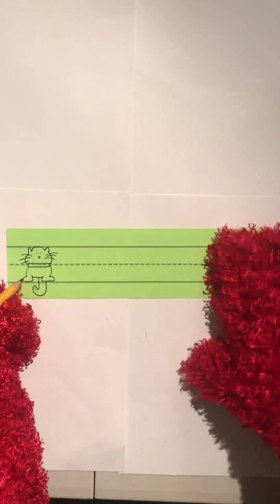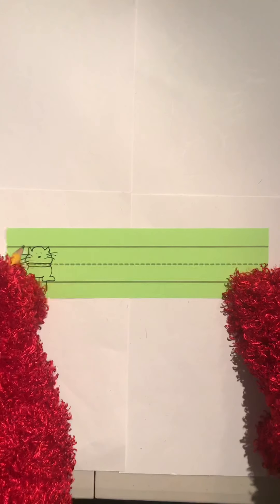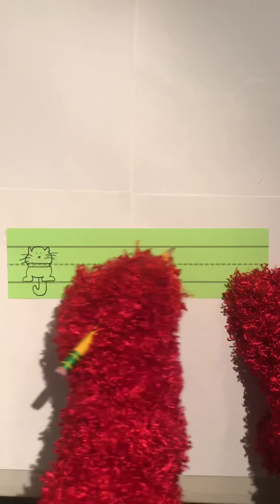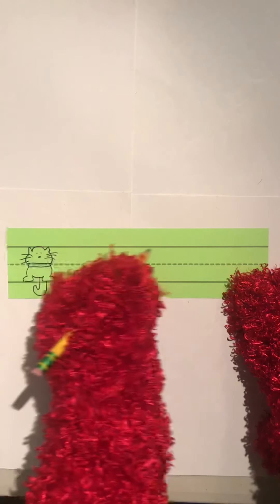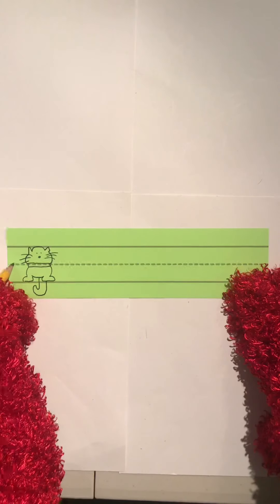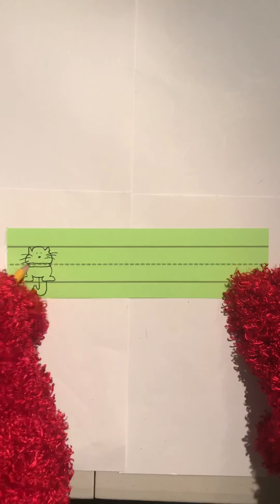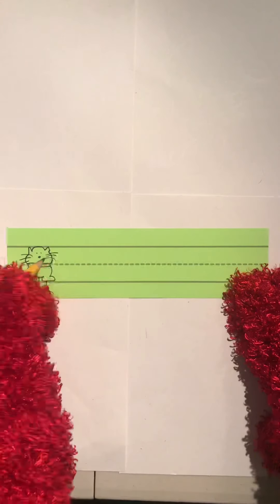So on my paper here, I have this top line that's nice and straight, and it touches the cat's head. So we're going to call that the head line, and then there's this line that goes da-da-da-da-da-da, and it goes right through the cat's collar. So we're going to call that the collar line.